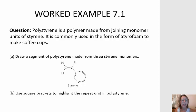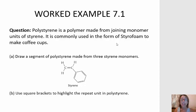Let's look at worked example 7.1. Polystyrene is a polymer made from joining the monomer unit of styrene, which is pictured below. It is commonly used in the form of what is branded styrofoam to make coffee cups and other to-go containers.